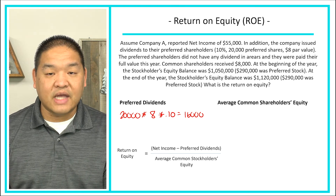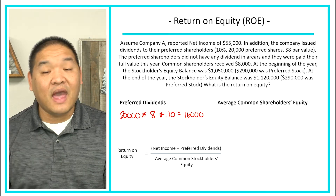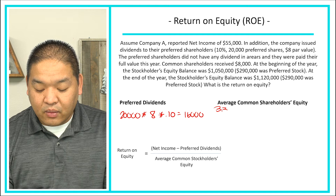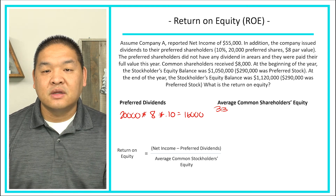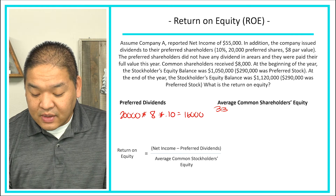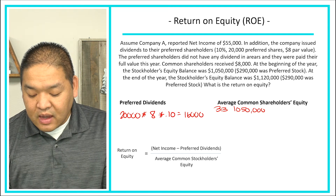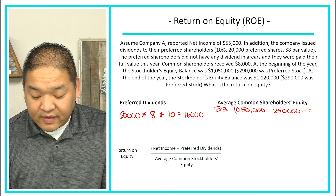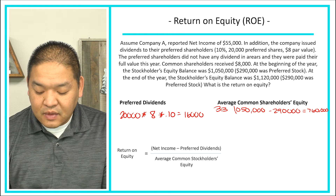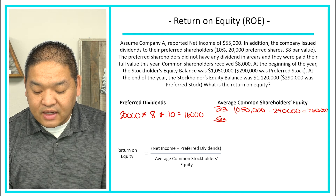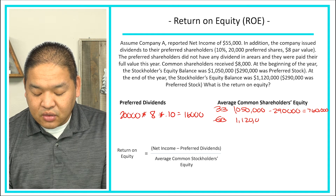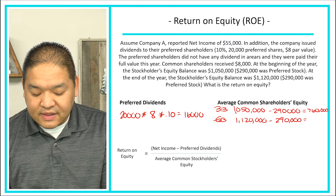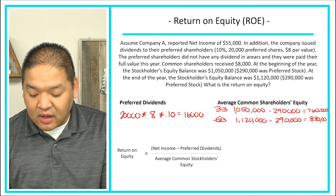Next we calculate the average common shareholders' equity. We take the beginning and ending balances, add them together, and divide by two. For the beginning balance, we take total equity of $1,050,000 and subtract preferred stock of $290,000, giving us $760,000. For the ending balance, we take $1,120,000 and subtract $290,000, giving us $830,000.